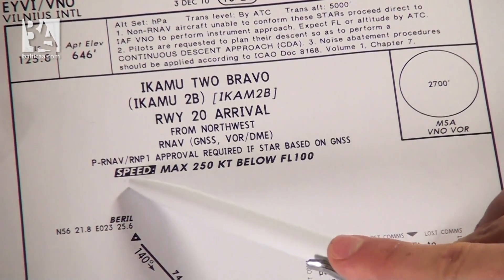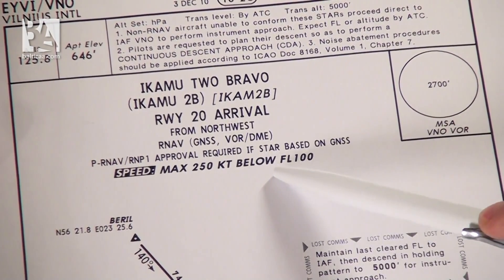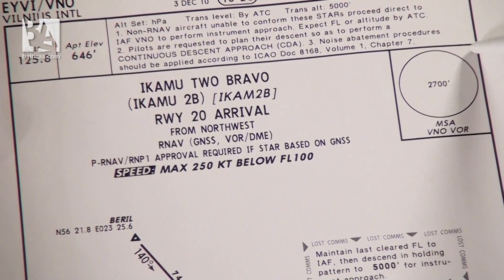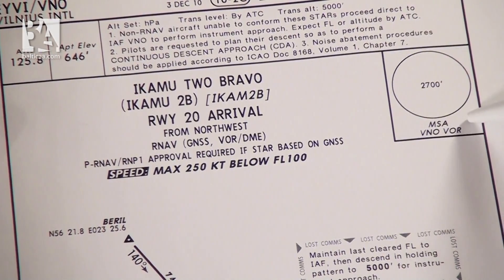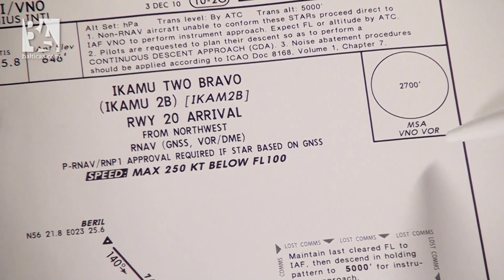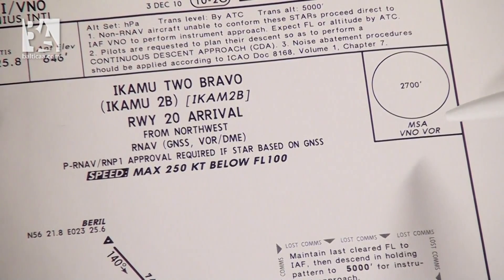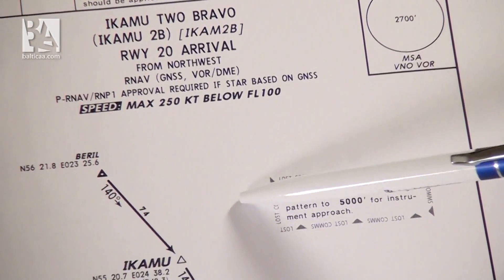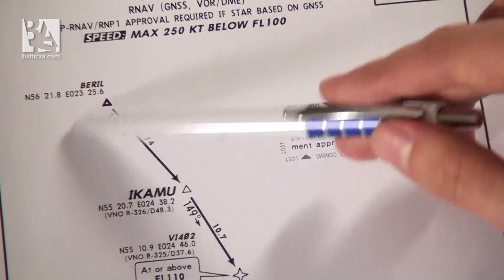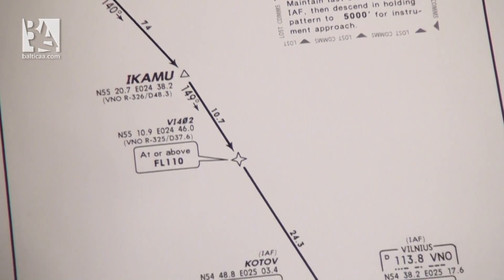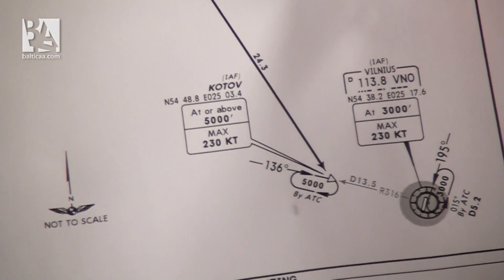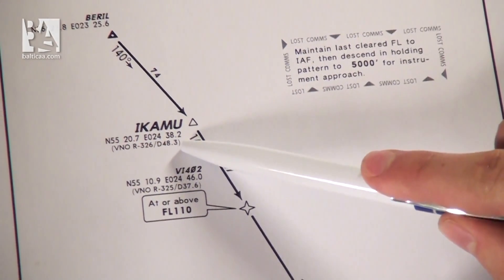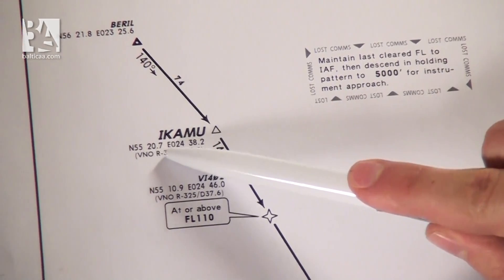Below this we see there is a speed restriction of 250 knots below flight level 100 or 10,000 feet. To the right we have the minimum safe altitude — the minimum altitude we should ever descend to except for the arrival or landing itself — with the center point Victor November Oscar VOR. And below this we have the routing map. We start at ICAMU; we have the radio and distance from Victor November Oscar and the coordinates for this waypoint.